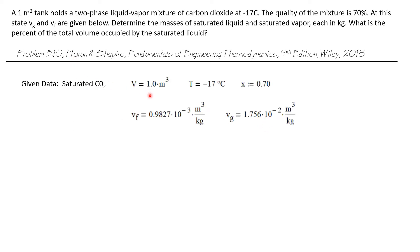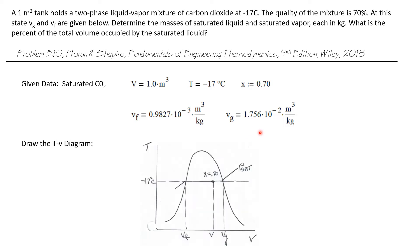Here's what we're given: the volume of the mixture is one cubic meter, its temperature is minus 70 degrees C, it is a saturated mixture with a quality of 70%. We're also given the specific volume of the saturated liquid and the specific volume of the saturated vapor in the mixture. Let's draw a TV diagram of what's going on here. We have a constant temperature line at minus 70 degrees C going through the vapor dome, and a constant pressure line associated with the saturation pressure at minus 17 degrees C going up to the right.